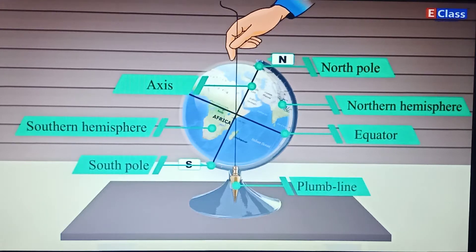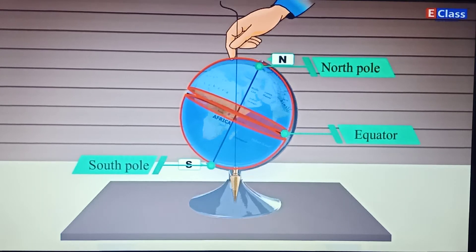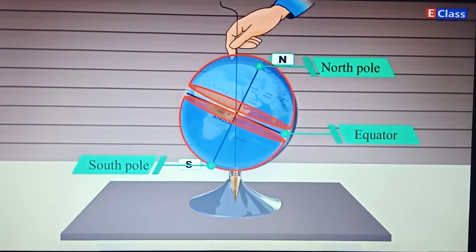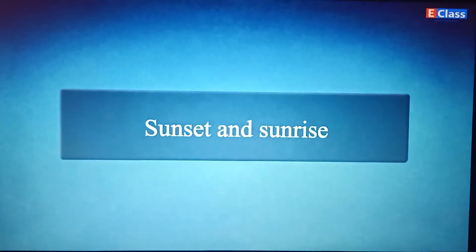If a circle were drawn around the surface of the Earth exactly in between the North and South Poles, it would divide the Earth into two equal parts. This imaginary circle is called the equator. The two equal parts it makes are called the Northern Hemisphere and the Southern Hemisphere respectively.